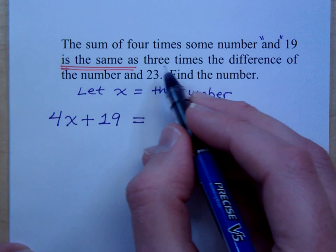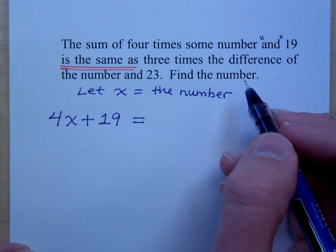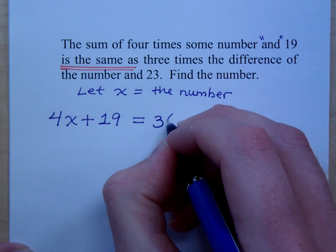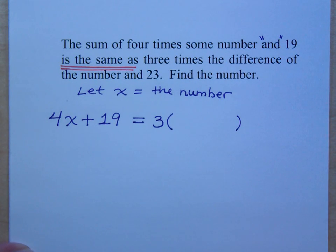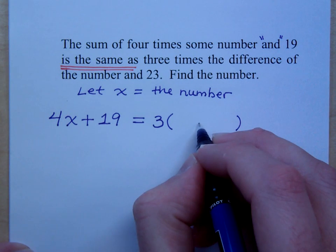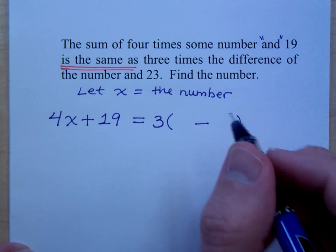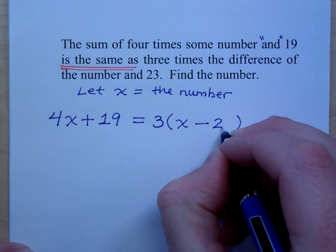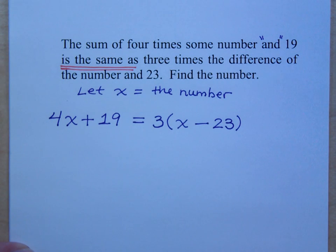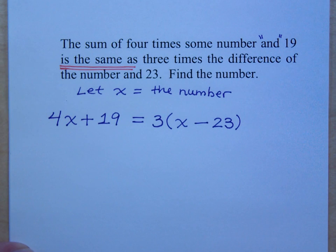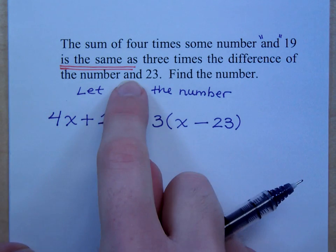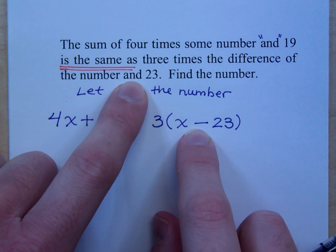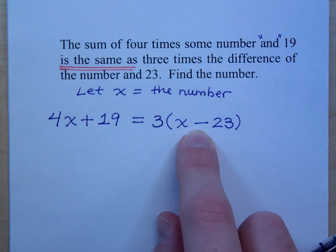Now look on the right side: three times the difference. I'm not even reading the whole thing, but I see three times the difference, which means I'm doing three times — is it three times a number? No, it's three times a group of stuff. So the group is a difference, meaning we've got subtraction. That's the difference of two pieces — the difference of something and something else. What's the first something? The number, so that's x. The word 'and' tells me where the operator goes — it's where the minus sign goes. The number and 23. We go back and see that it's the difference, so that's why we have subtraction here.